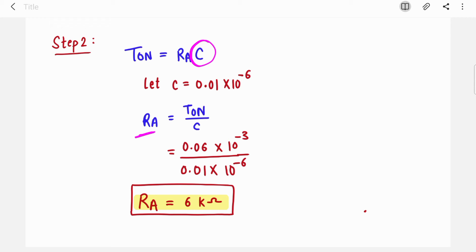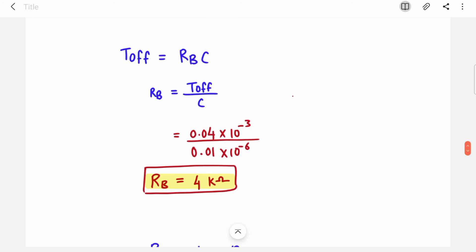You know the value of T_on and you have to assume the value of C so that you can find out value of resistor. Let's assume C is 0.01 microfarad. I just substituted T_on here and value of capacitor which we assumed, so RA will come out as 6 kilo-ohms.